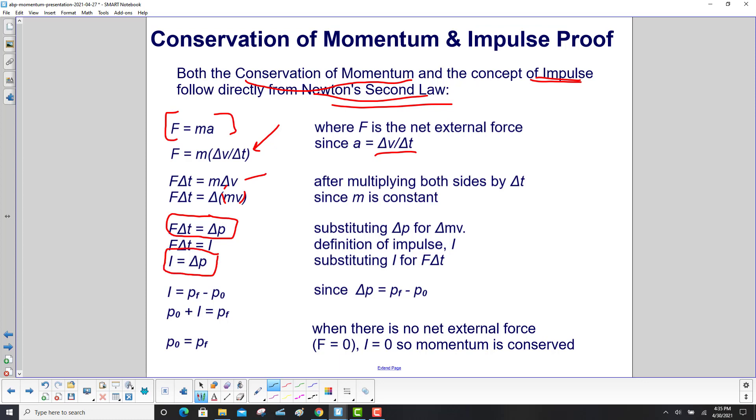So right here is our impulse momentum equation. Impulse equals pf minus p0, final momentum minus initial. That's initial momentum plus impulse equals final momentum. If we have no net external force, then the impulse will be zero, and we get initial momentum is final momentum. So here's our conservation of momentum, all starting with Newton's second law.